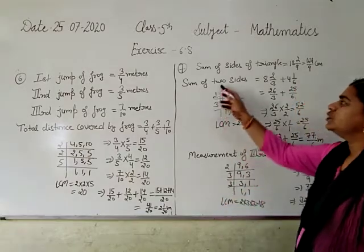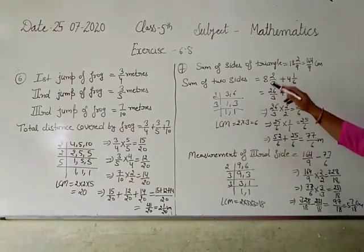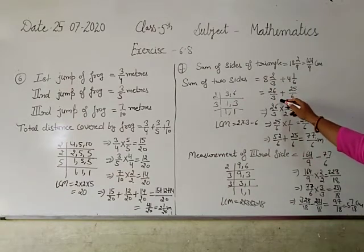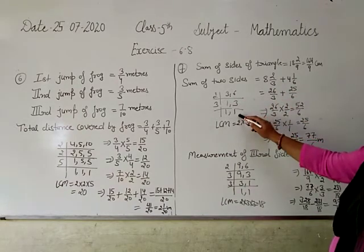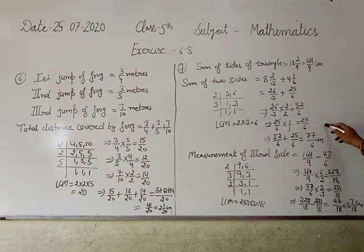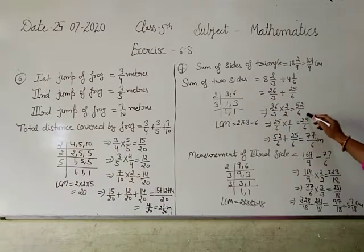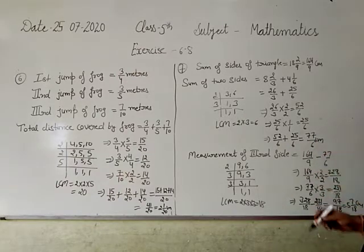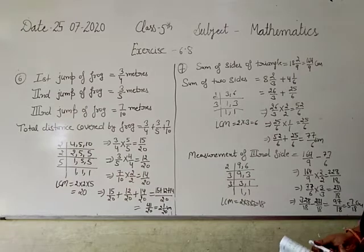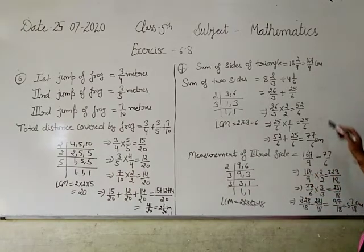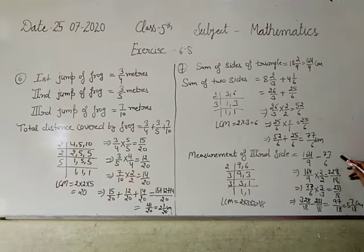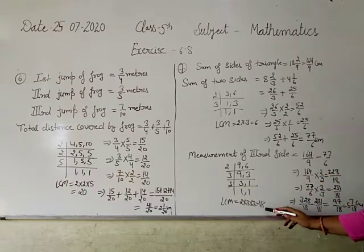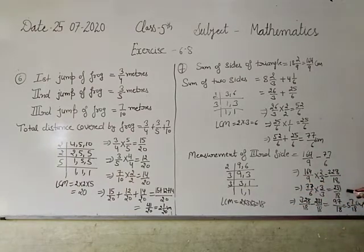Sum of 2 sides - these are mixed fractions, change into improper fraction. Take LCM and make like fractions. Like fractions are 52 by 6 and 25 by 6. We add this fraction. Answer is 77 by 6 cm. And the measurement of third side is 164 by 9 minus 77 by 6. We take LCM, LCM is 18, and make like fractions.